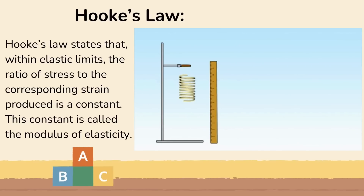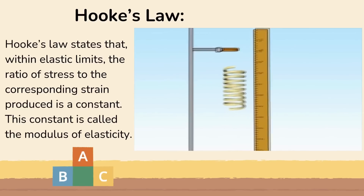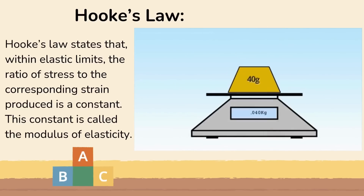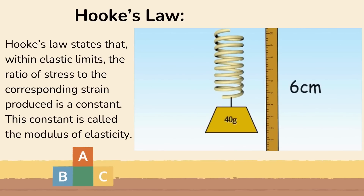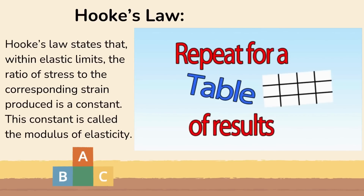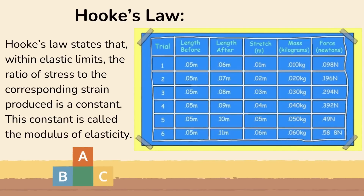First, set up the retort stand. Measure the length of the spring in its natural state before any force is applied, then making sure you weigh the weight first, place one on the end of the spring. Give the spring time to settle and again take note of the new length. Also take note of the weight applied to it. Now add another weight and repeat the previous step of measuring the new length and weight on the spring. Repeat this until you have a table of results — the more results the better. The table of results will contain 5 columns: the first two will be the length of the spring before any force is applied and the new length afterwards, both measured in meters. The next will be the total stretch of the spring in meters. The next will be the mass applied to the spring, and the final column will be the force applied, measured in newtons.